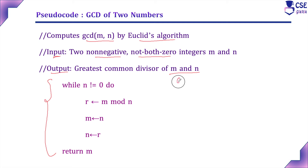Consider the example GCD of 24 and 12. The logic uses a while loop: while N is not equal to zero, execute three instructions — R = M mod N (divide M by N and assign the remainder to R), then assign N to M, and assign R to N. Repeat until N equals zero, then exit the loop and return M as the result.